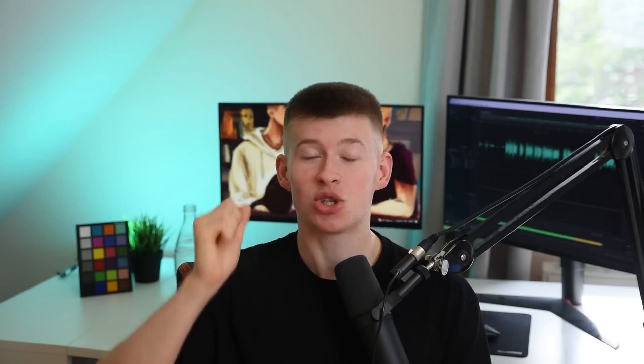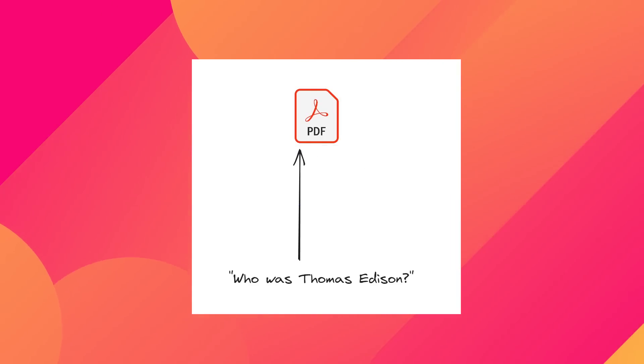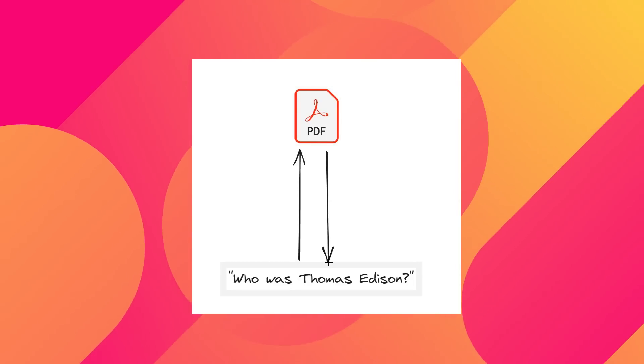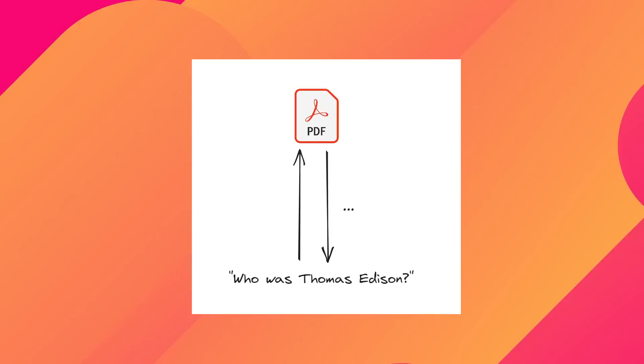Idea number one is chatting to PDF files. That can be like a university lecture or technical documentation. Essentially, we can upload our own PDF files to the service we're gonna be building. That service will index everything semantically so we can later perform a search on it. Then we can ask questions, summarize the PDF, and execute a lot of different interactions against that PDF.